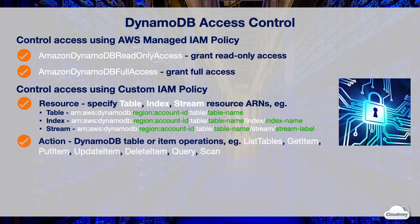You can use the action element to specify table or item operations that you would allow or deny, such as list tables, get item, put item, update item, query, and scan. You can use the effect section to allow or deny actions on the specified resources. By default, all resources and actions are implicitly denied until you explicitly allow them.